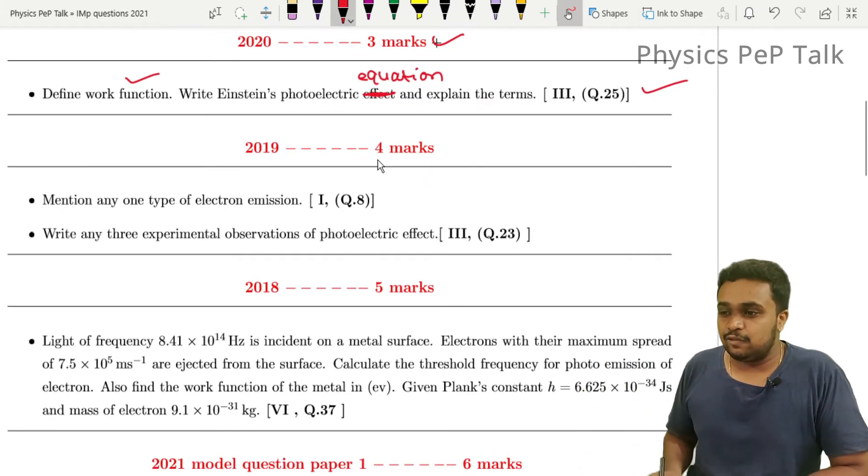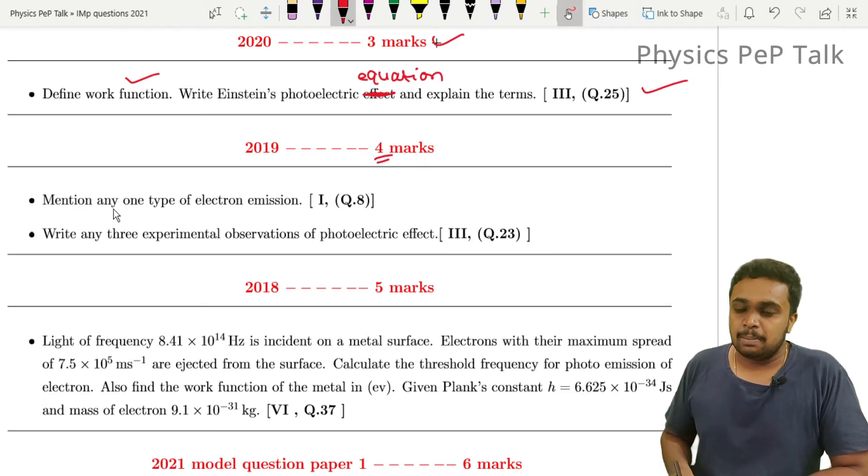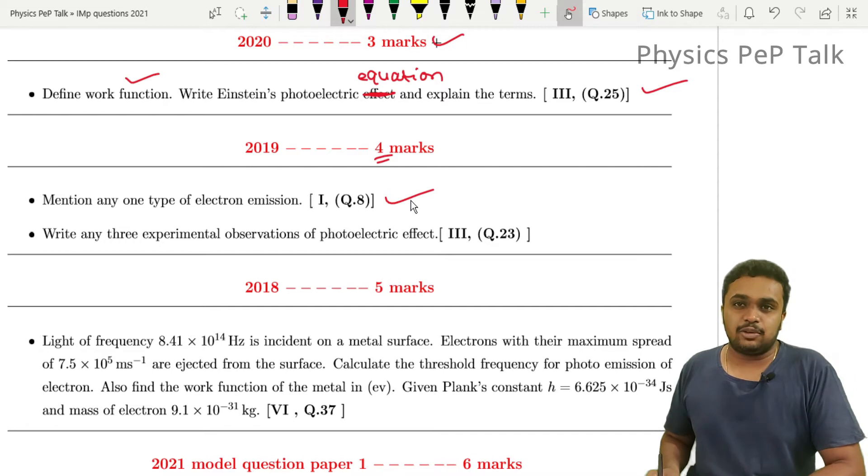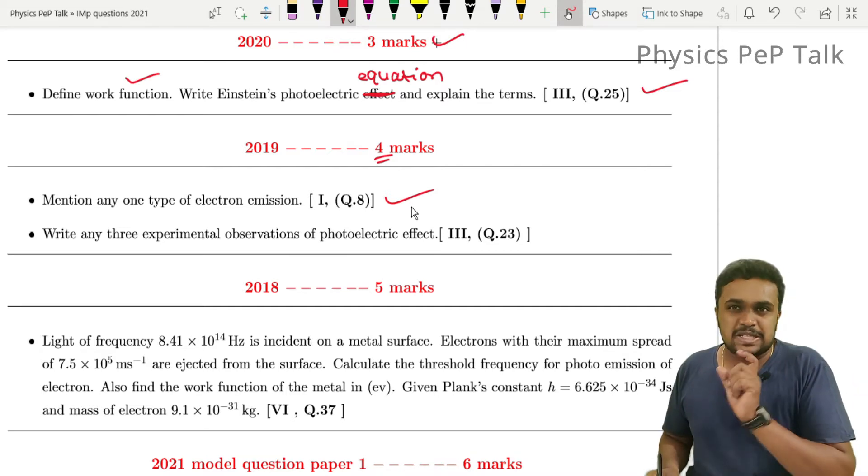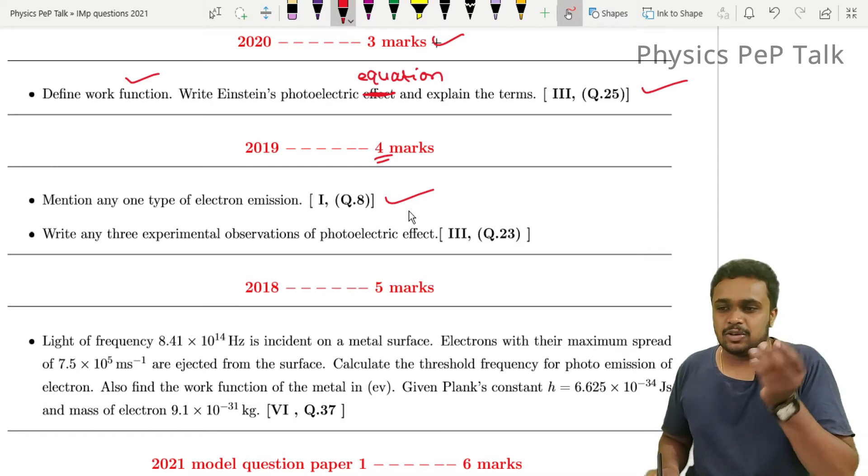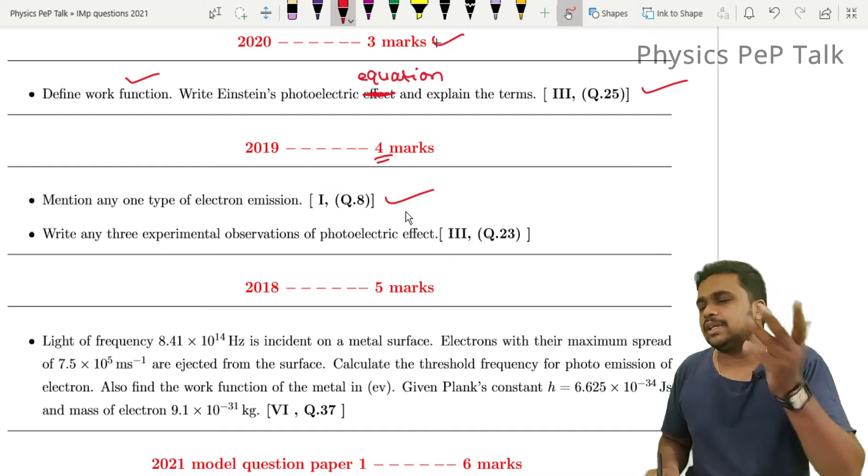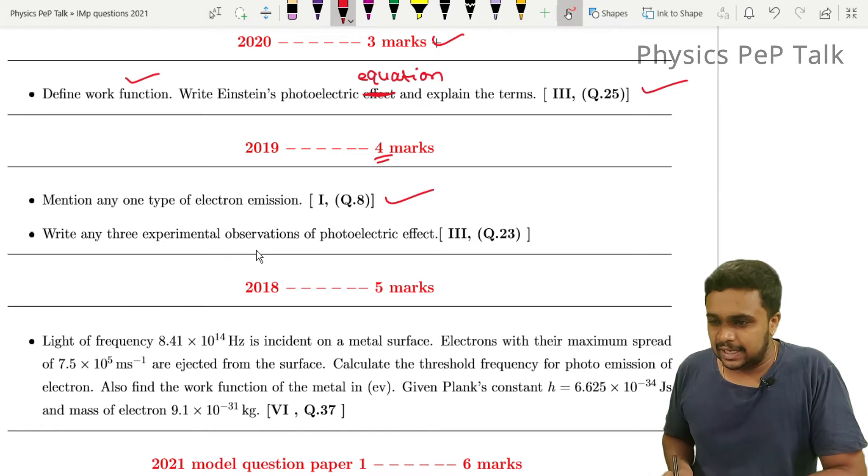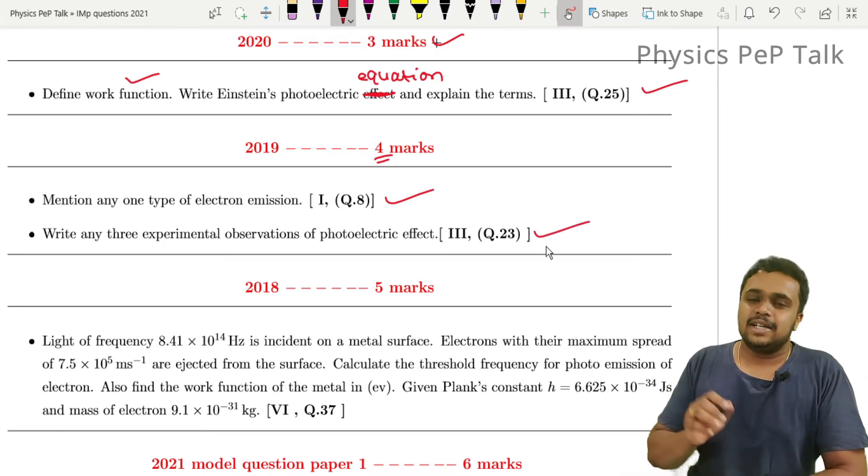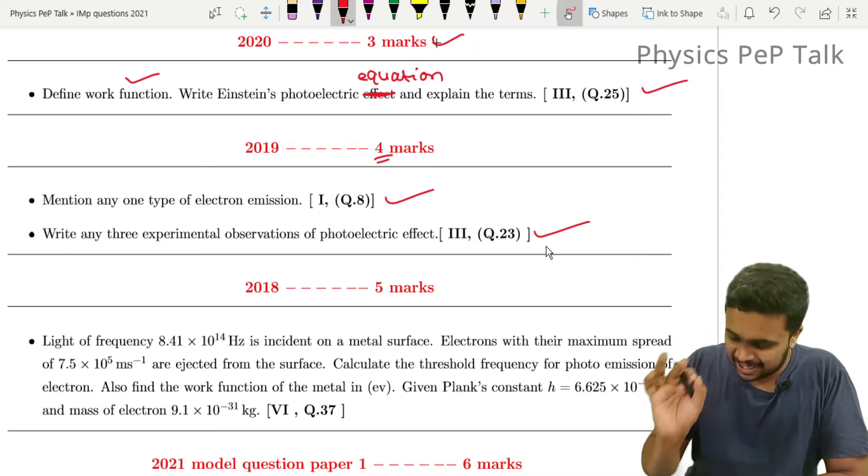2019, four marks are written in this chapter. Mention any one type of electron emission. Electron emission is like thermionic emission or photo emission. If you say specific, one mark is written. If you write any one, that's one mark. That's the question paper setting. Write any three experimental observations of photoelectric effect. This is an experimental observation of photoelectric effect.